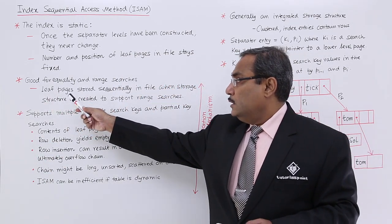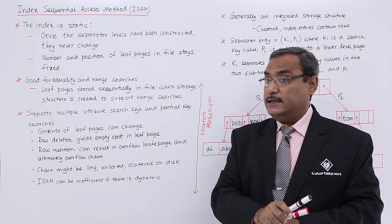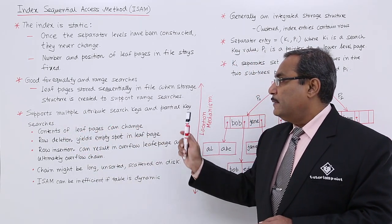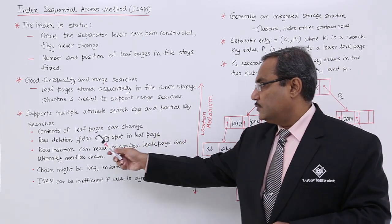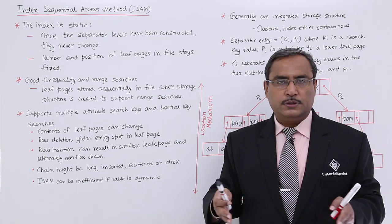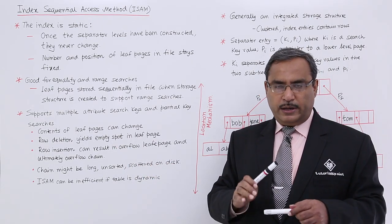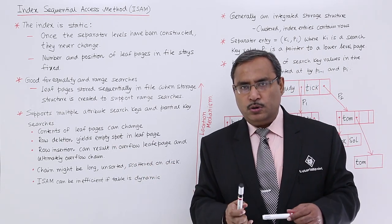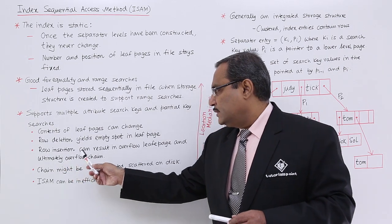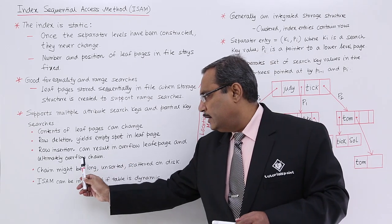Leaf pages stored sequentially in the file when the storage structure is created to support the range searches as I have mentioned here. Supports multiple attributes search keys and partial searches also. Contents of the leaf pages can change. Whatever the contents in the leaf nodes they can easily be changed. Row deletion yields empty spot in the leaf page. Whenever there will be some deletion of the node it will leave one empty spot in the leaf page. Row insertion can result in overflow leaf page and ultimately overflow chain.